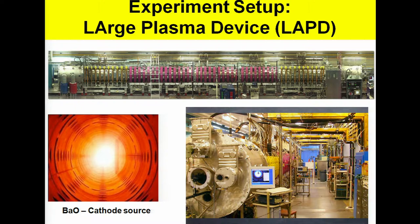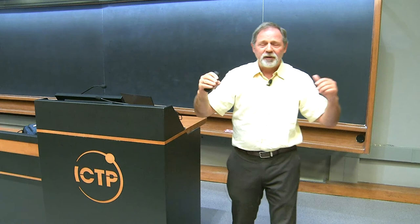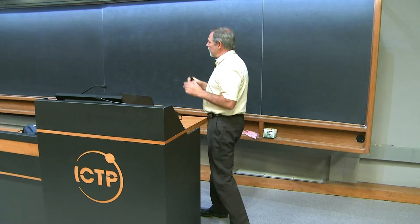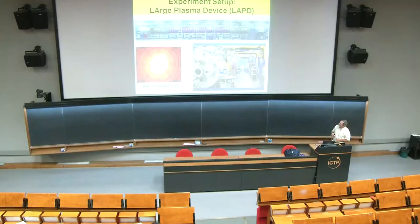We do the experiments in the large plasma device at UCLA. Length here is very important, and motivates why we need to do this in a very long chamber. The reason we need 18-meter-long plasmas, and also the very large diameter, will be explained. The main plasma is created in the barium oxide cathode and pulsed every one second. The plasmas are magnetized — one kilogauss magnetic field — and the beta, the ratio of thermal pressure to magnetic pressure, is rather small, about 10⁻⁴. So it's considered a low-beta plasma.